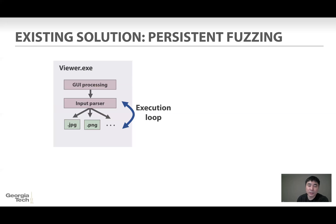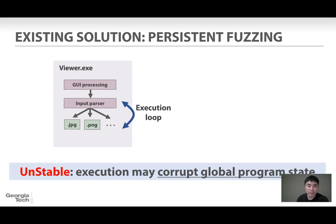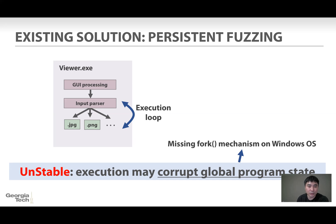The second existing solution is persistent mode fuzzing. In the program, we can try to execute the input parser logic iteratively. But this approach is unstable because iteratively executing the same routine may corrupt global program state, since Windows does not have a fork mechanism like Linux.